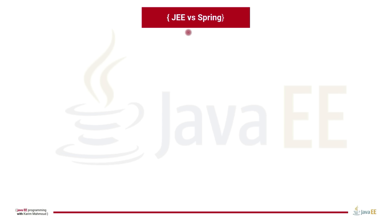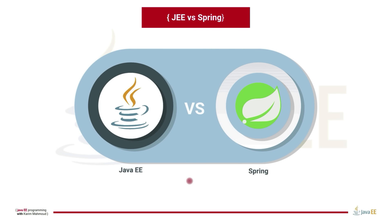Many of you are familiar with Spring Framework, especially if you are looking for a job. Almost all Java work opportunities require Spring Framework knowledge, and a question often arises: should you know Java EE to be able to work in Spring? Java EE is mandatory for web development, and it is a must-learn to be able to work in Spring, as Java EE is the basis of web development in Java.